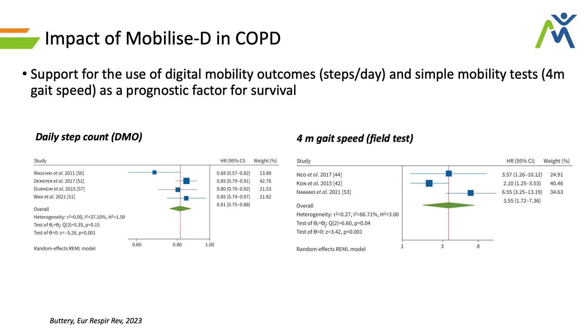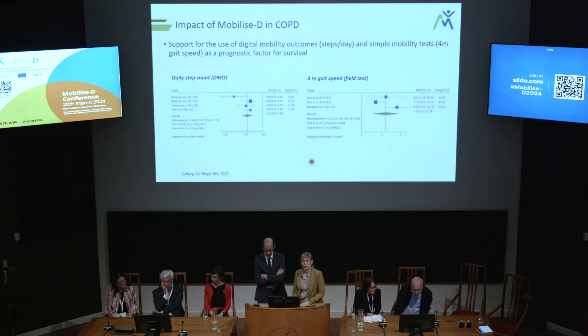Besides being an important endpoint, physical mobility can also serve as a prognostic factor. This is work done by Sarah Buttery during the project. She showed that there is evidence of an association between steps per day — the volume of activity — and mortality, and that simple mobility assessments in the lab also show evidence of an association with mortality.